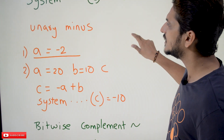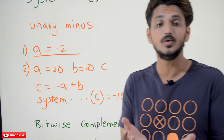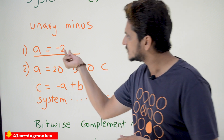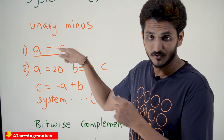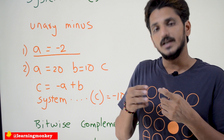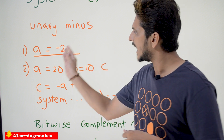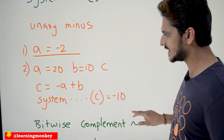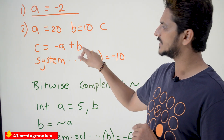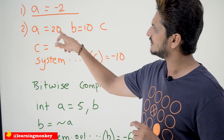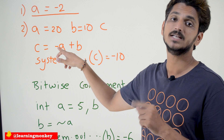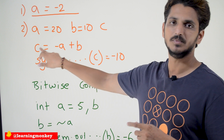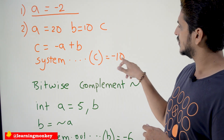Now coming to unary minus. If you want to represent negative numbers, we use the unary minus symbol. For example, int a = -2: for the integer value 2, we place a minus before it — single minus negates the value to -2 and assigns it to a. Another example: a = 20, b = 10. If c = -a + b, then -a means -20, and -20 + 10 = -10. System.out.println(c) will display -10.